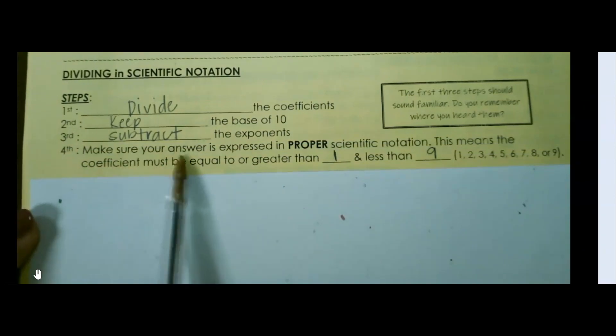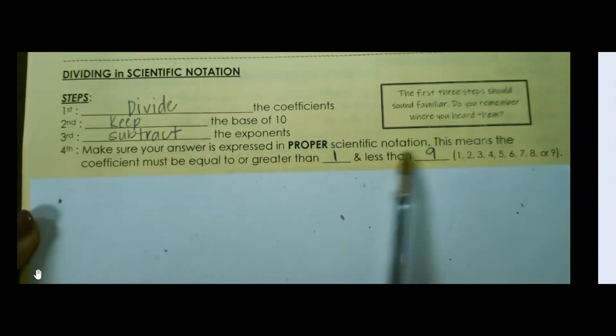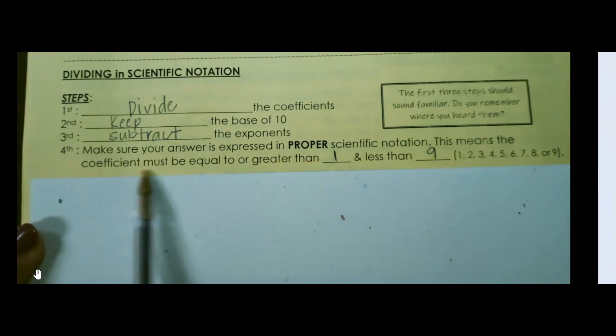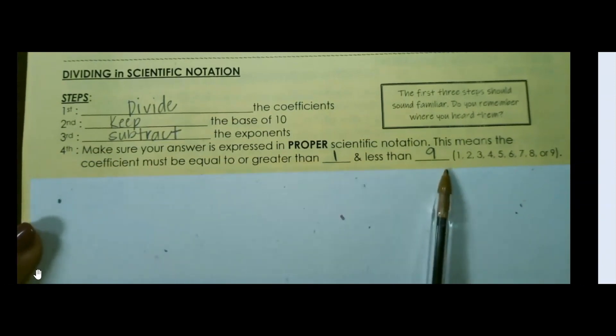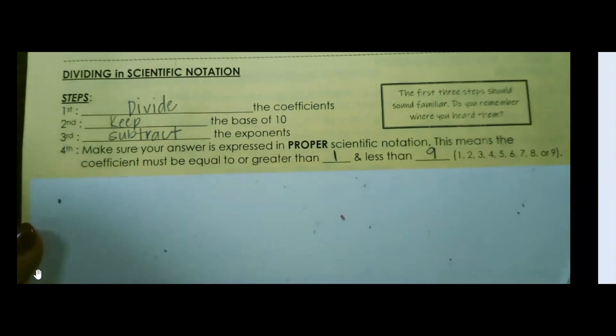Step 4 is to make sure that your answer is expressed in proper scientific notation. This means that the coefficient must be equal to or greater than 1, but less than 9. So any of these numbers listed here.